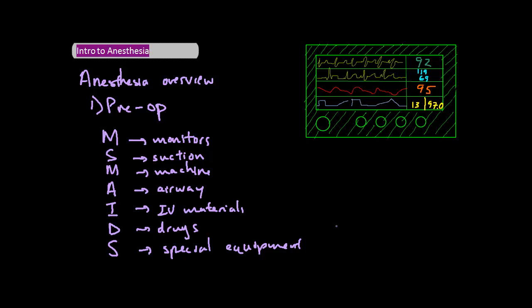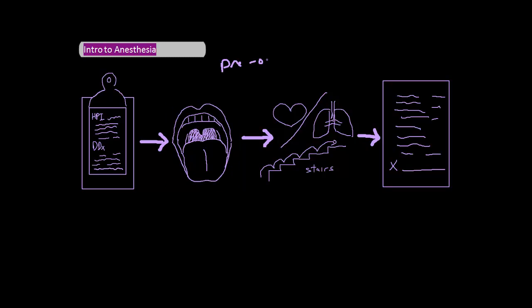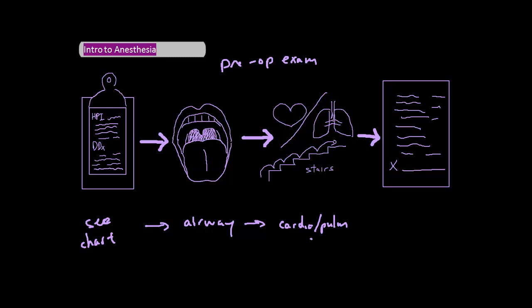The next step is to see the patient. The purpose of seeing the patient is to do a quick double-check of what was read in the chart in terms of previous medical conditions, medications, and allergies, as well as to get a better sense in person of aspects relating to anesthesia. This includes looking at the airway to determine how difficult the intubation might be, asking about chipped teeth, dentures, and crowns to further guide intubation techniques, and figuring out cardiovascular and pulmonary status to determine how much vital signs need to be kept in check and whether there will be problems with extubation.